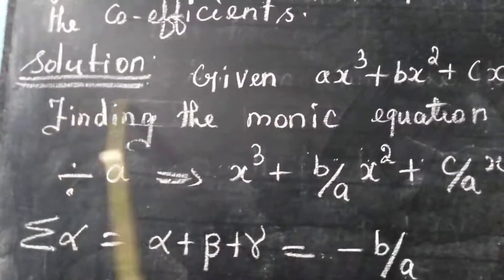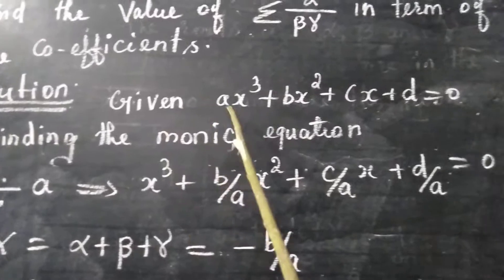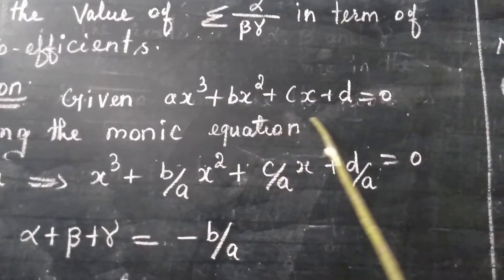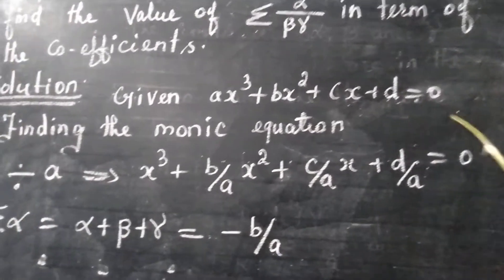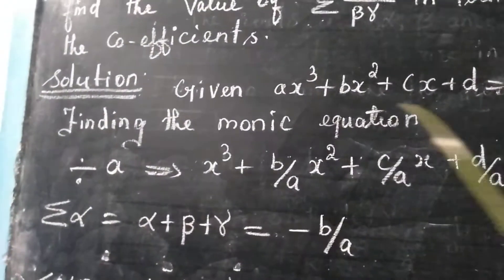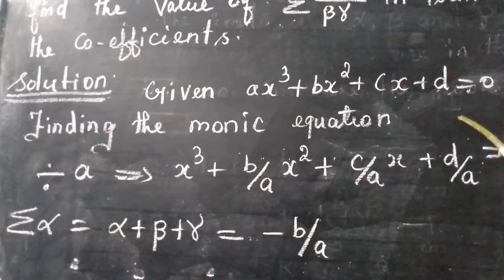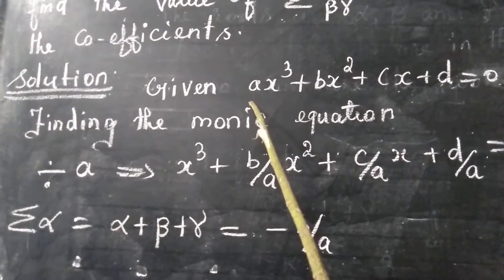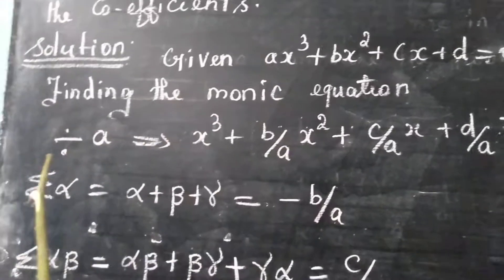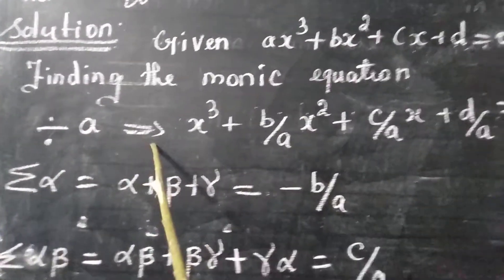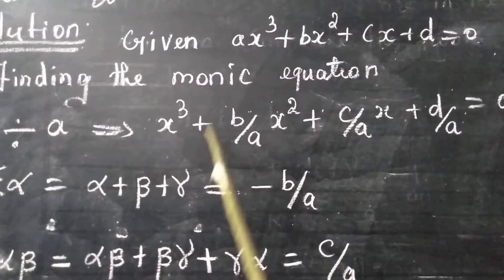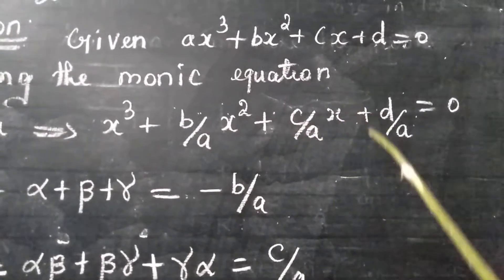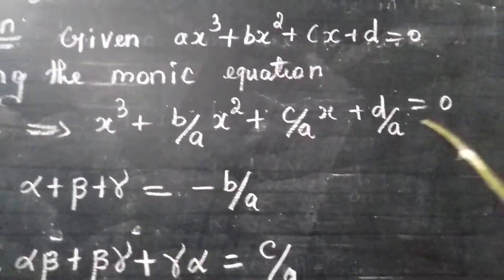Solution. The given equation is A x cube plus B x square plus C x plus D is equal to 0. Now we are going to convert this equation into a monic equation, so we are going to divide by the leading coefficient A. If we divide by A, we get x cube plus B by A x square plus C by A x plus D by A is equal to 0.